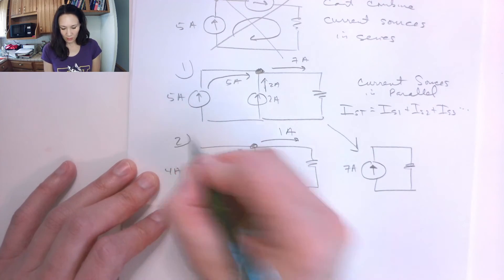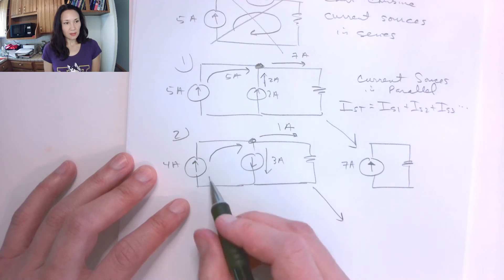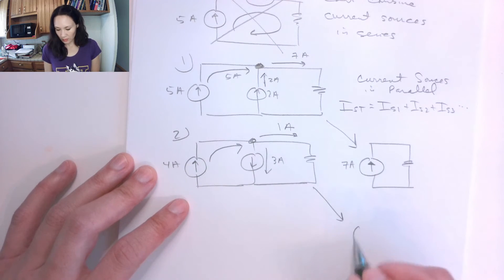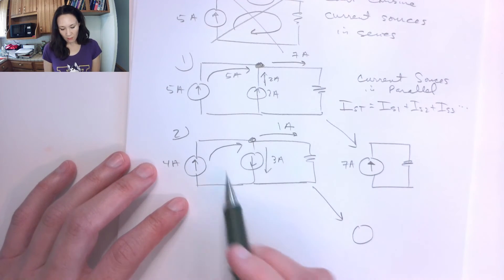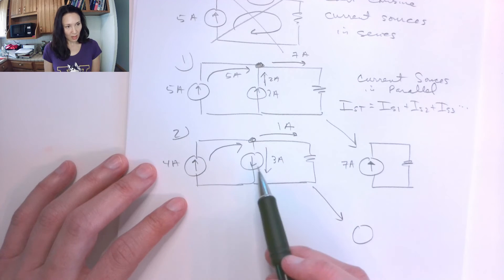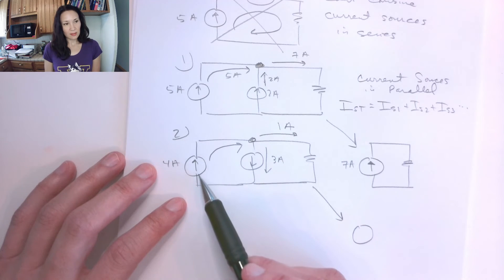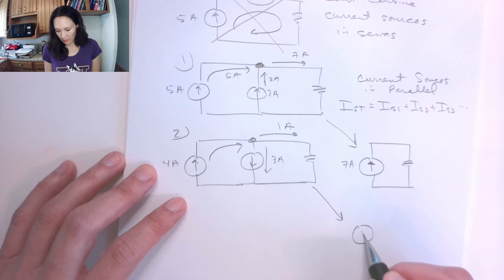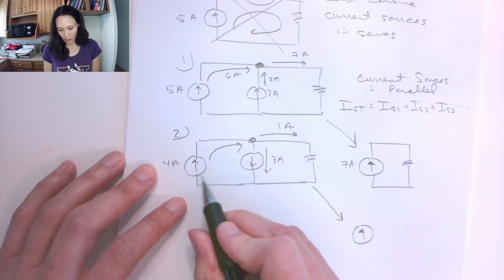For our second example, I can replace these 2 current sources with a single current source. How do I know if it should be pointed up or down? Since this one has more current, I'm going to subtract out the 3 amps, so I'll be left with 1 amp, and that is going in the direction of the larger current source.